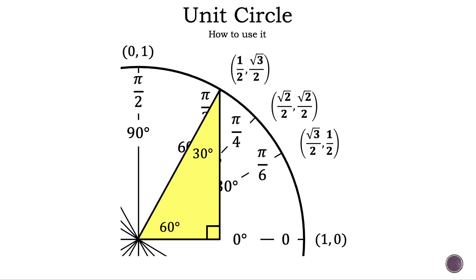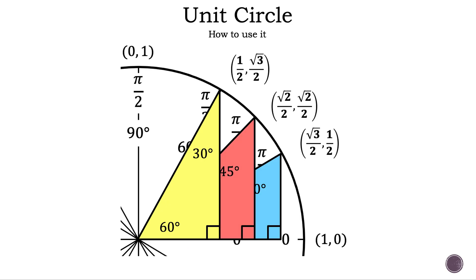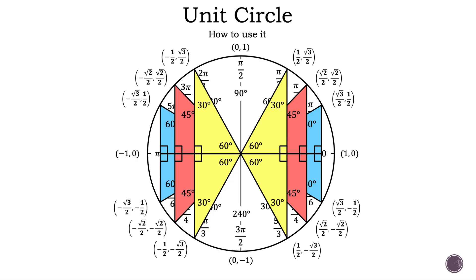Now let's place the last special triangle on the unit circle. The hypotenuse, which is the radius, is still 1. The side across from 30 degrees is 1 over 2, and the side across from 60 degrees is square root of 3 over 2, leading to the point (1/2, √3/2). So we can use the special right triangles to construct the unit circle, and we can continue doing this in the other quadrants as well.